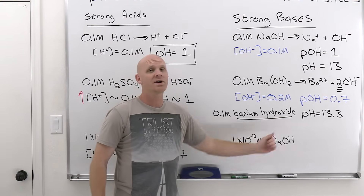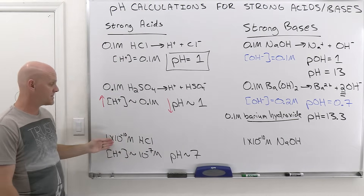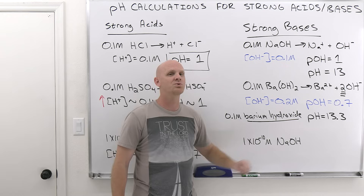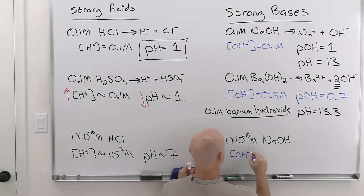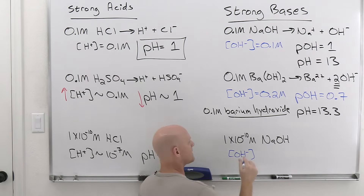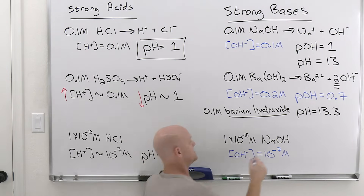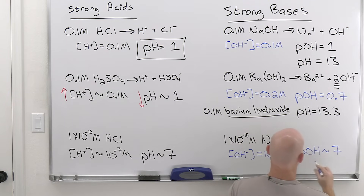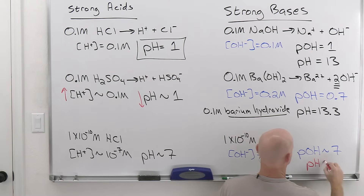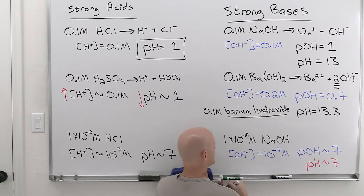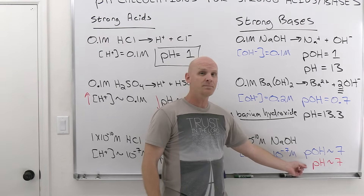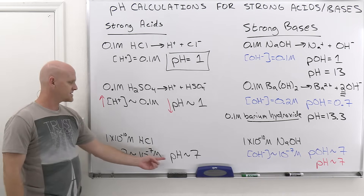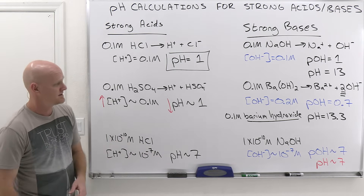Finally, 1×10^-10 molar NaOH. This is similar to what we saw with 1×10^-10 molar HCl. You're adding so much less hydroxide than what's already present in pure water that it effectively makes no difference. Water already has 10^-7 molar OH-, so what we've added on top of that is insignificant — we'll just ignore it entirely. The pOH is still approximately 7, which means the pH will also be approximately 7. Note that here the pH is about 7 but just slightly on the basic side — maybe 7.01 — whereas the dilute HCl case was slightly acidic, maybe 6.99.